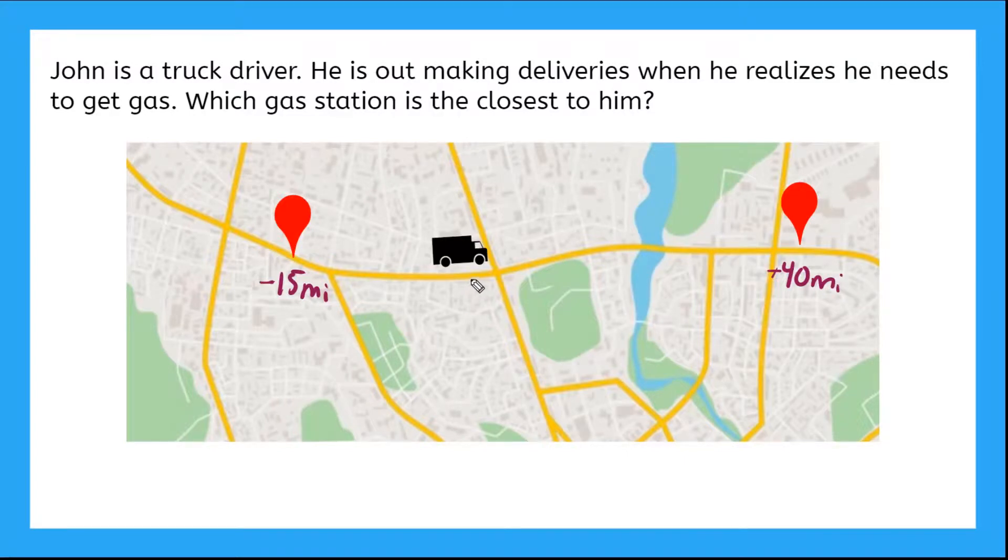If we think about John's location as our zero point, we can just find the distances to each gas station. We can do this by taking the absolute value of both distances. So the absolute value of negative 15 miles would be positive 15 miles. And the absolute value of positive 40 miles would give us positive 40 miles. So the gas station that's behind John is actually closer to him. It's only 15 miles away.